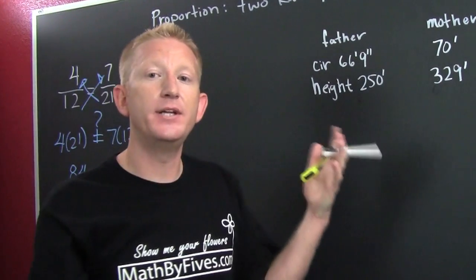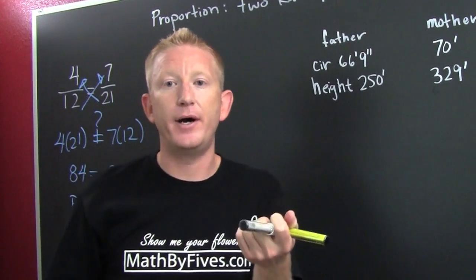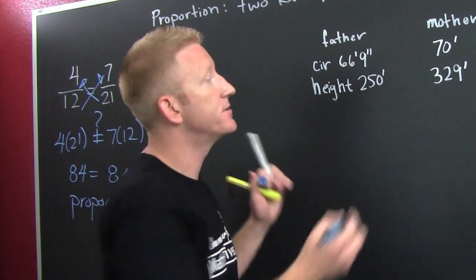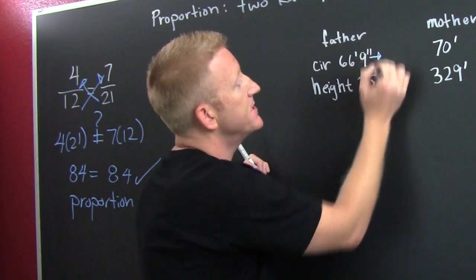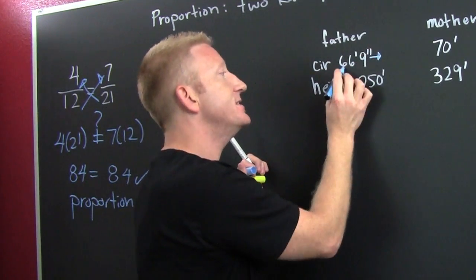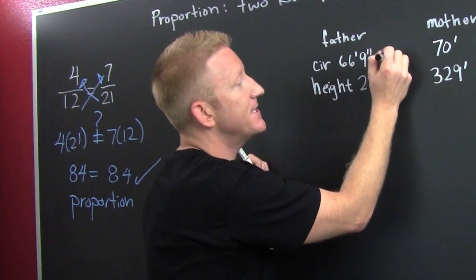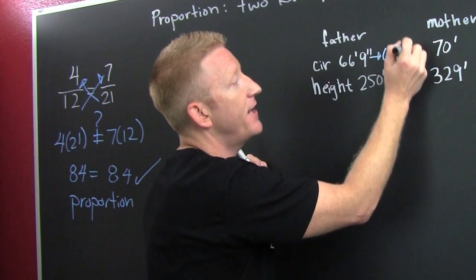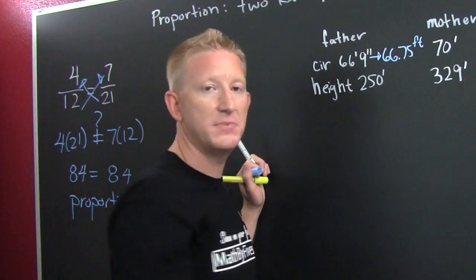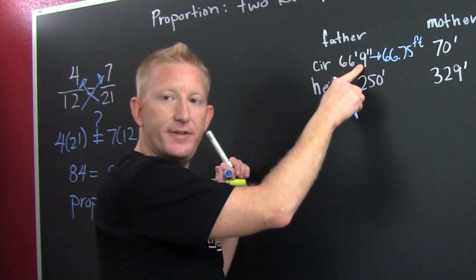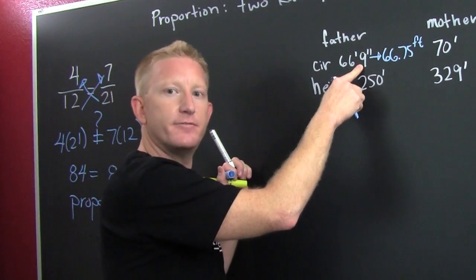But we need to get them all in the same units. So this guy, 66 feet 9 inches is 66.75 feet. That sounds about right, because that's three-fourths of a foot.